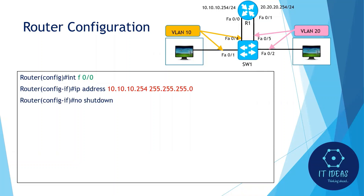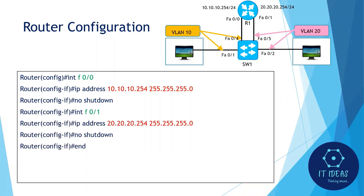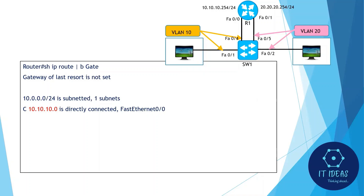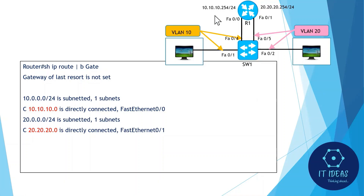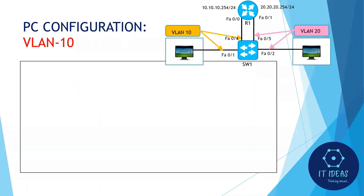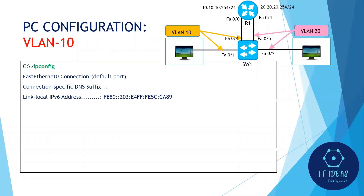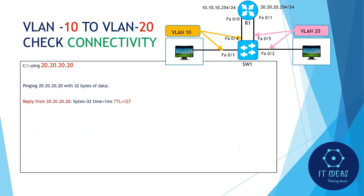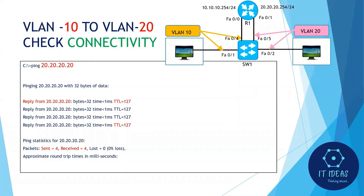Next we will configure the router interfaces. For interface F0/0, assign the IP address in the VLAN 10 subnet. For interface F0/1, assign the IP address in the VLAN 20 subnet. Now we will check the routing table — we can see the routes for VLAN 10 and VLAN 20. We can also see the configurations of the VLAN 10 and VLAN 20 PCs, and verify PC connectivity between VLAN 10 and VLAN 20.